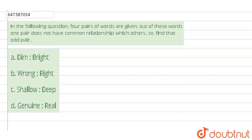So here the question given is, in the following question, four pairs of words are given. Out of these words, one does not have the common relationship with others. So find the odd pair.